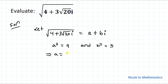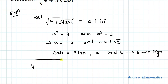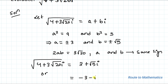This implies A = ±3 and B = ±√5. Since 2AB = 3√20 is a positive number, A and B must have the same sign. Therefore, the value of √(4 + 3√20·i) equals 3 + √5·i or −3 − √5·i. I hope you have understood the solution. Thanks for watching — please subscribe and hit the like button for more such interesting videos.